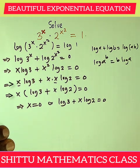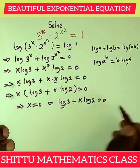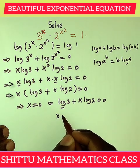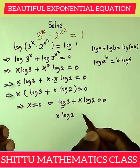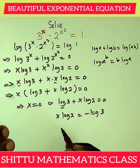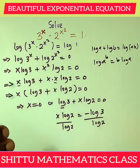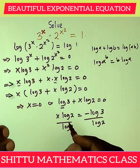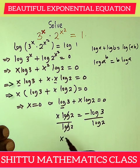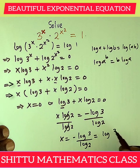For the second case, we send log 3 to the other side: x log 2 equals minus log 3. We are looking for the value of x, so we divide both sides by log 2. Log 2 cancels, giving us x equals minus log 3 over log 2.